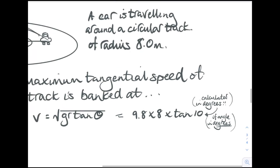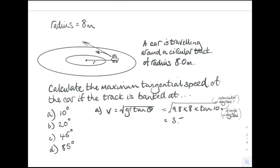If you're doing trigonometry in degrees, make sure your calculator is set to degrees. That gives us an answer of 3.71—that's the maximum tangential speed.